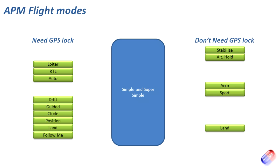With Super Simple mode, you don't have to account for the fact that the craft is pointing in a different direction. My recommendation is never use these. They're handy as a get-out-of-jail-free card if you're not sure which way you're pointing, but as an RC pilot you have to get to grips with orientation, and my recommendation would be just get to grips with it.